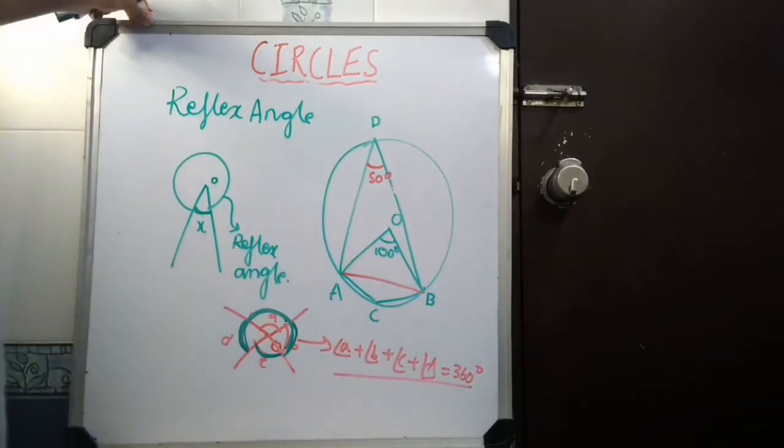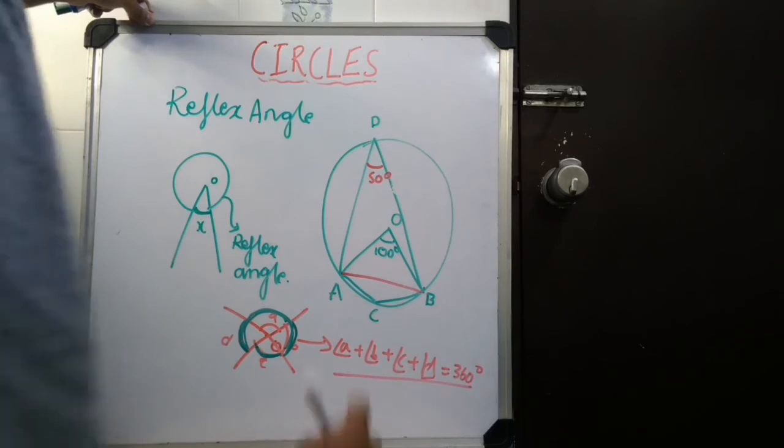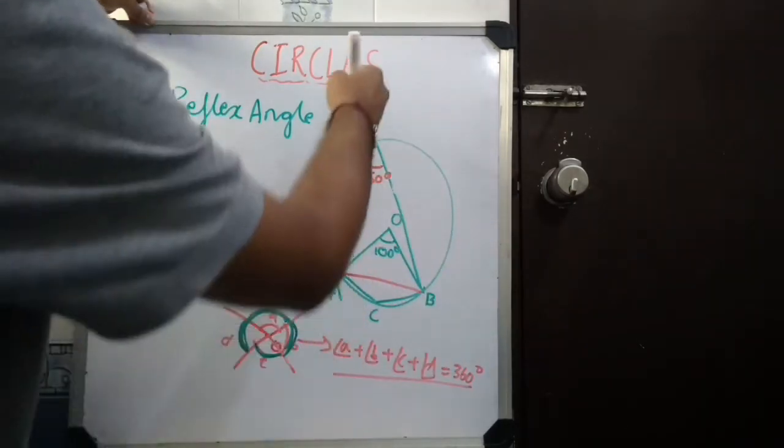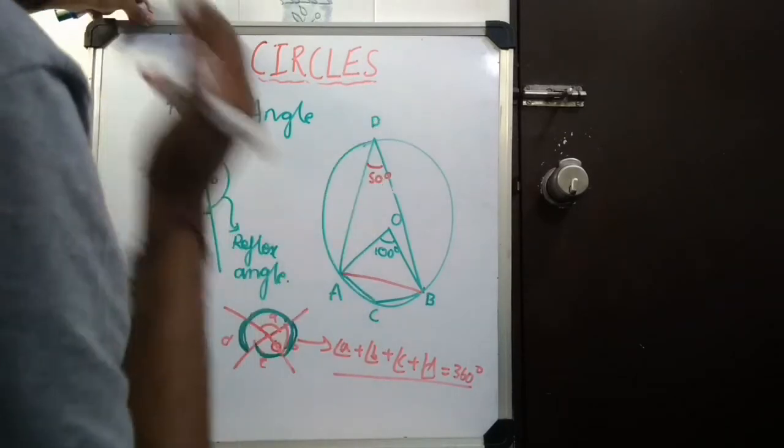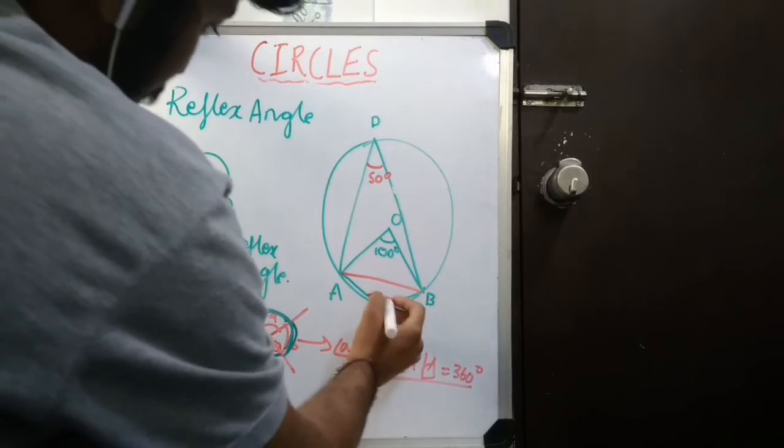And according to my property of the cyclic quadrilateral, can I say that A, D, B, C is a cyclic quadrilateral. So, therefore, the opposite angles will be supplementary. The sum of them will be supplementary. So, if this is 50, this will be 130.